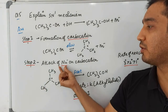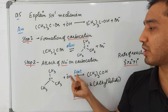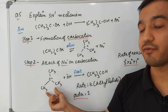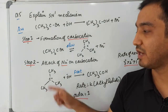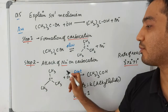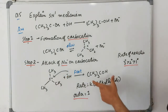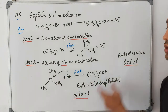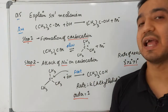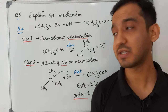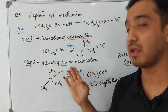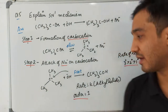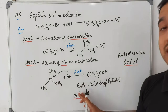The second step is the attack of the nucleophile on the carbocation. As soon as the carbocation is formed, the nucleophile attacks this carbon, resulting in formation of the tertiary alcohol. This second step is the fast step.